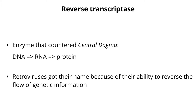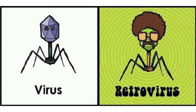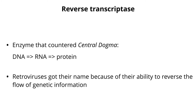Another reason this discovery was so important was that reverse transcriptase countered the central dogma, proposed originally by Watson and Crick, that all organisms have DNA and the flow of information goes from DNA to RNA to protein. Retroviruses reversed it, and that's why we call them retro—it's not because they're 1950s-style. They got their name because they can reverse the flow of information from RNA to DNA to protein. That's why we have retroviruses and reverse transcriptase.